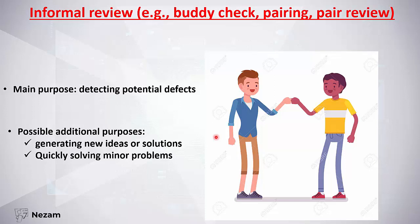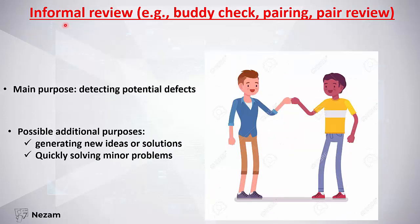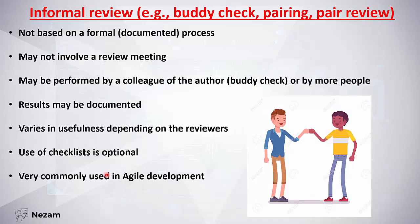Now we move to review types. There are four major review types that vary in level of formality — from least formal to most formal. The first and least formal is the informal review, also called buddy check, pairing, or peer review. Its main purpose is to detect potential defects. Possible outcomes include generating new ideas and easily solving minor problems in the project.